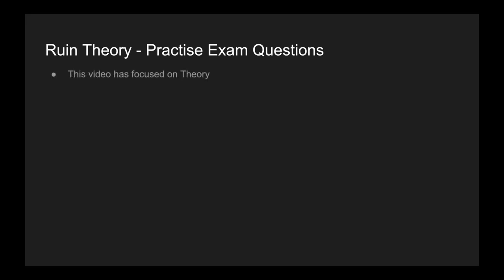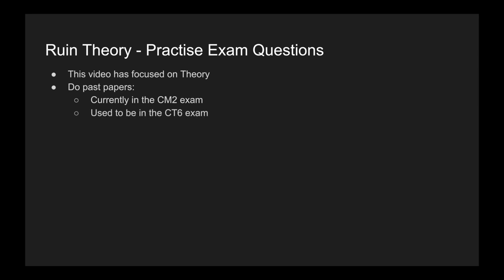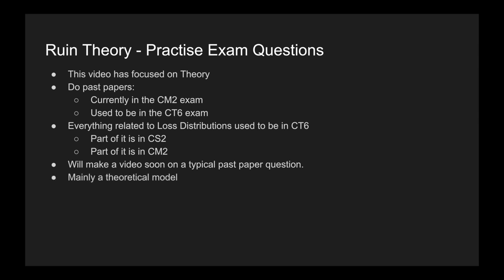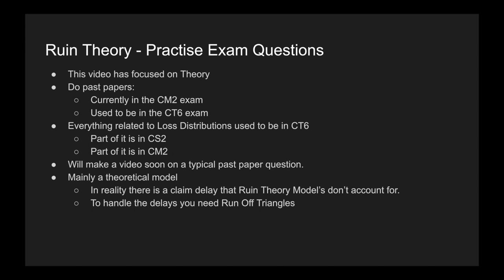This video has been focusing primarily on the theory — a broad overview. You do need to do a lot of past papers. Ruin theory exam questions are currently in the CM2 exam; they used to be in CT6. If you want more practice questions, go to CT6. Back in the day, everything relating to loss distributions and insurance was in CT6, but it's now been split between CS2 and CM2. A past paper video will be coming soon. For those thinking about applying this in practice, remember this is mainly a theoretical model — it doesn't necessarily account for claim delays. To handle delays, you need runoff triangles, which we'll discuss at a later stage.